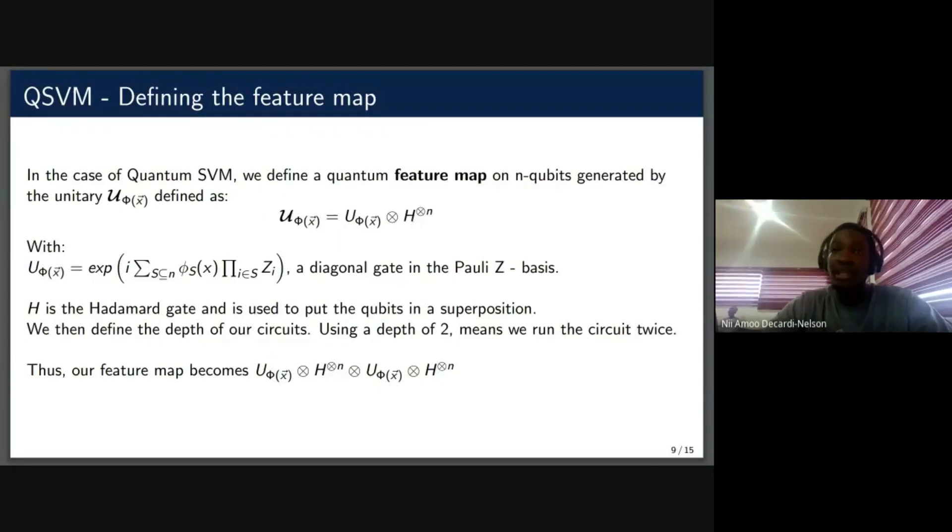So the Hadamard gate will put all the initial kets that we initialize to zero into a superposition so that the quantum computer can take advantage of that. We would run this feature map or this circuit twice. So that would mean that we would have a depth of two. And that just means that we are repeating this expression twice. So finally, at the end, our feature map would have this expression.